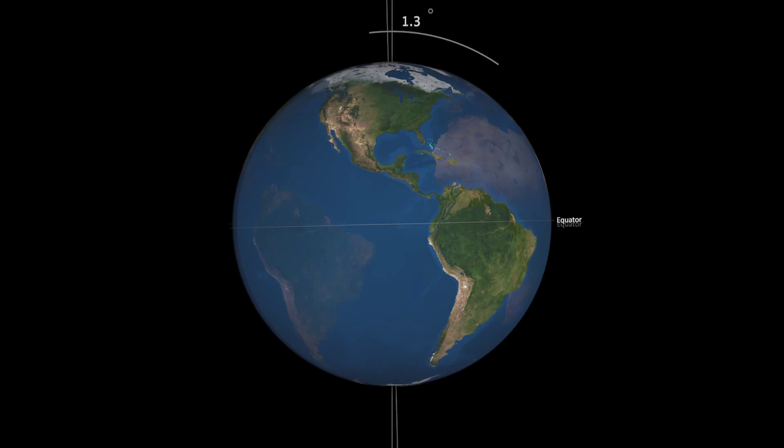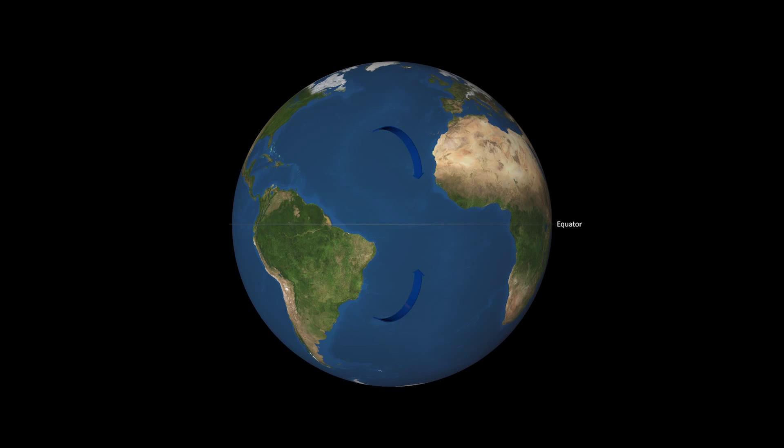If we return to our convection cell, we find that the flow to the north in the upper atmosphere is deflected to the right by Coriolis. Conversely, the return flow to the south near the Earth's surface is deflected to the right.